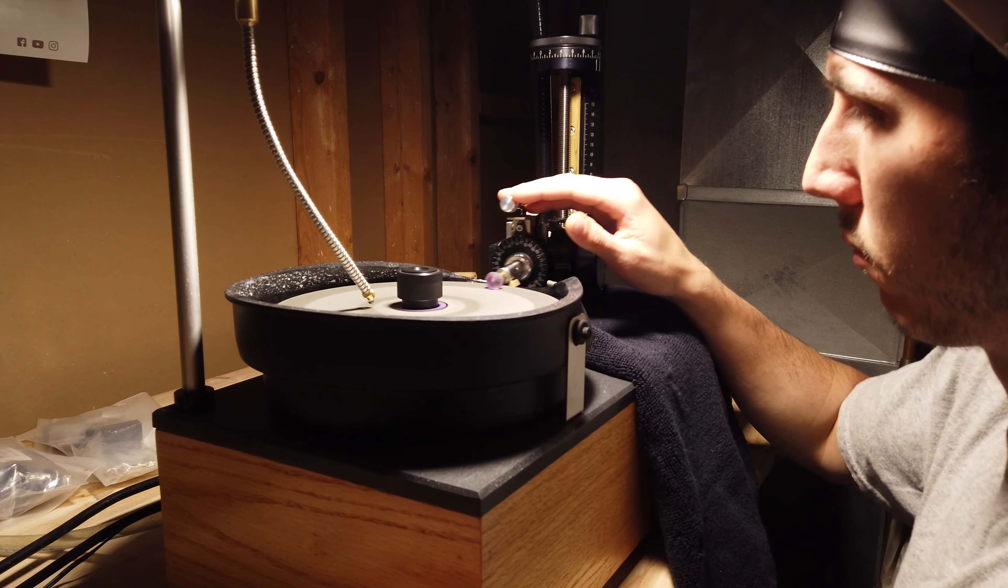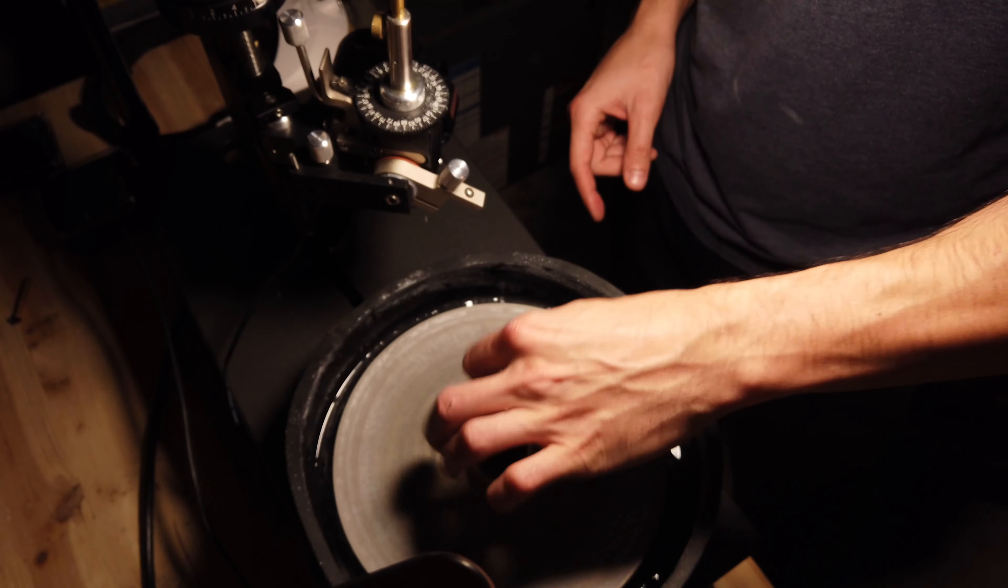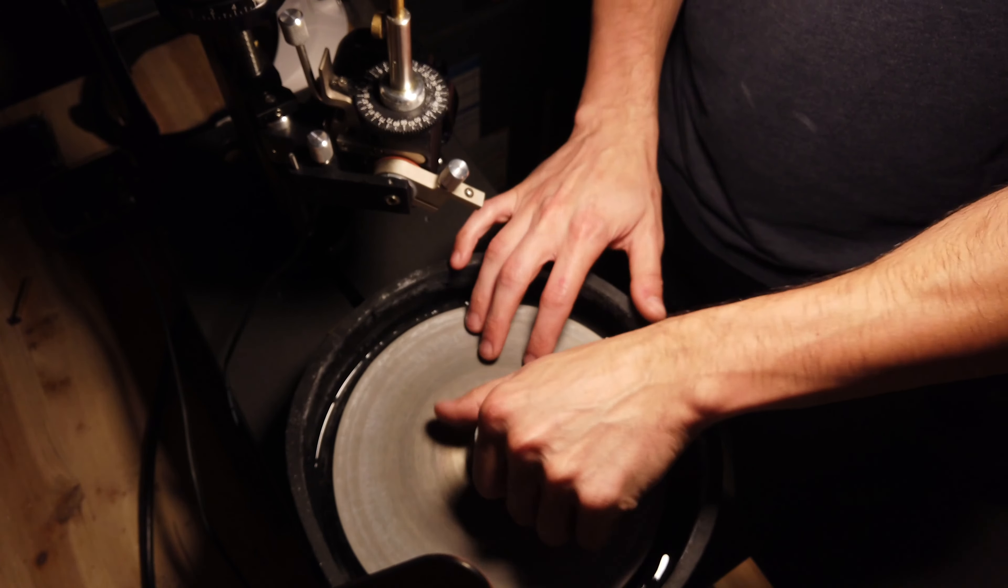So now we got the pavilion shaped in, I'm just going to change my disc over to my 3000 grit, which is going to be the pre-polished stage on the gem. And here I'm just going to show you guys how quick a row of facets goes once you get the gem shaped up.